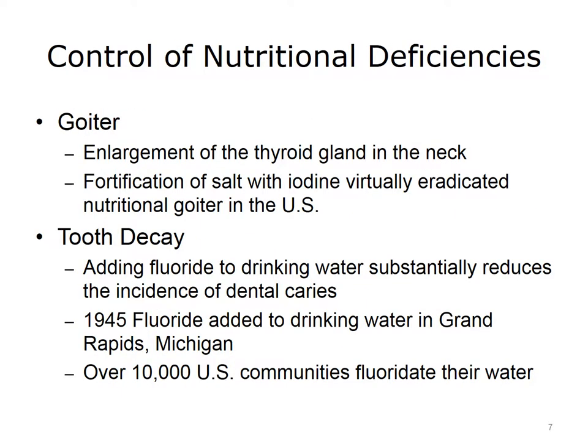Interventions dictated by public health have been responsible for the successful control of many nutritional deficiencies. An example is goiter — an enlargement of the thyroid gland in the neck due to impaired thyroid hormone synthesis from lack of iodine in the diet. The solution was to fortify salt with iodine, which virtually eradicated the problem.